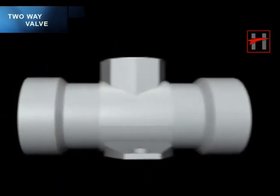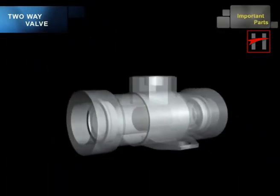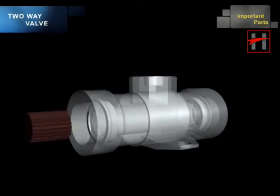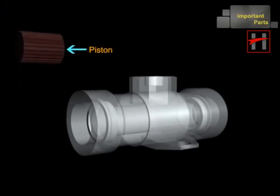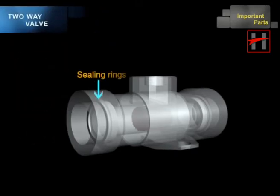The important parts of the two-way valve are the valve body, piston, and sealing rings.